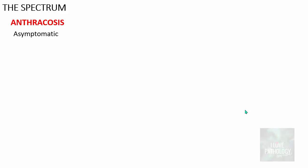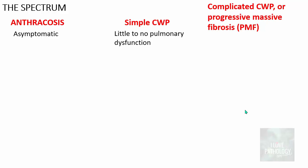The spectrum of disease is varied and occurs in three forms. The first is anthracosis, which is an asymptomatic form. The second is simple coal workers' pneumoconiosis, where there is little pulmonary dysfunction or the patient may even be asymptomatic. The third is complicated coal workers' pneumoconiosis, also referred to as progressive massive fibrosis, where there is compromised lung function.